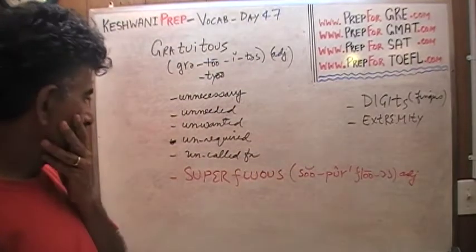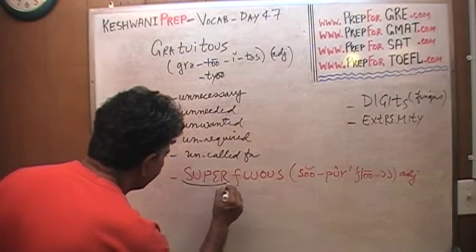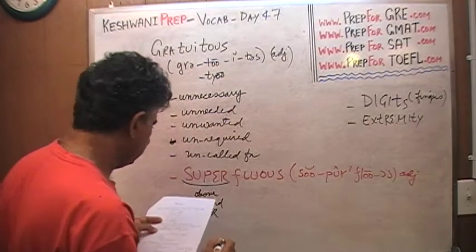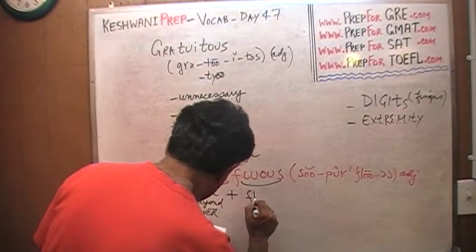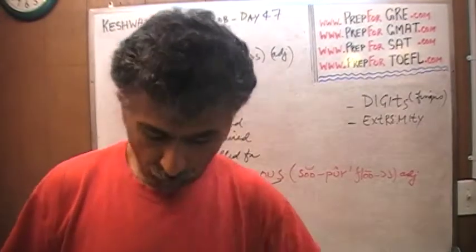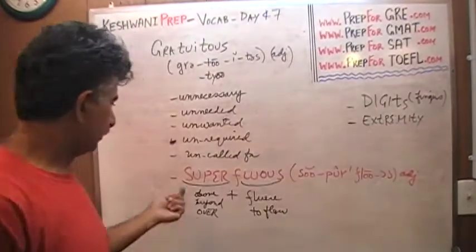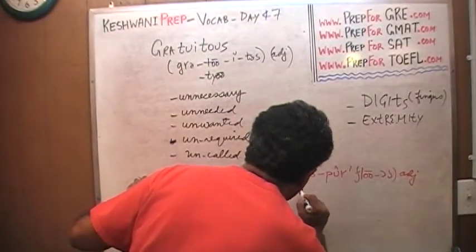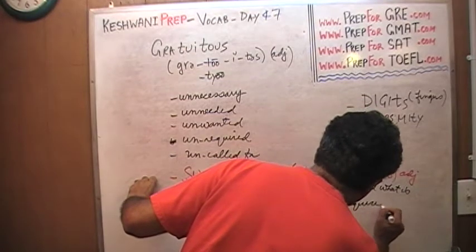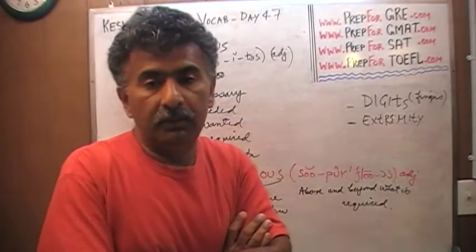Superfluous. Superfluous literally means - let me put down what it means literally. Super, the prefix, means above or beyond or over. And the second part, flows, comes from the word fluere, which means to flow. So superfluous literally means overflowing. It is more than what you need. If something is overflowing, it's beyond what is required, beyond what is sufficient. Superfluous means it is above and beyond what is required.